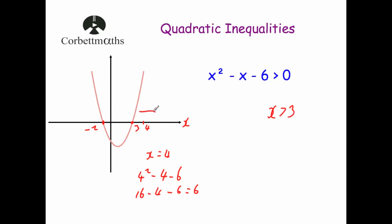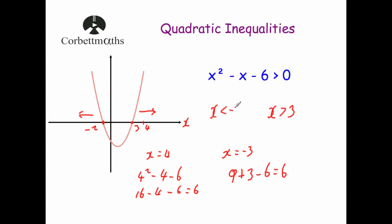We also have the region to the left of minus 2. If we try x equals minus 3: minus 3 squared is 9, minus minus 3 is plus 3, minus 6 gives 6 — positive again. Minus 4 would also be positive, and any value less than minus 2 works. Since we can't write this as one inequality, we write two separate answers: x is less than minus 2, or x is greater than 3. These are the two distinct regions.